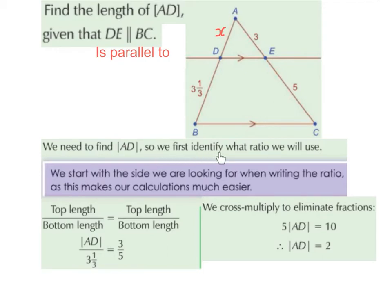We first identify what ratio we will use. We're going to use this little formula: top length divided by bottom length is equal to top length divided by bottom length — top and bottom on the left equals top divided by bottom on the right.